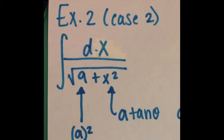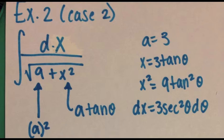In the next example, we'll be using an integral that involves Case 2. Here we have the integral of dx over the radical of 9 plus x squared. 9 is obviously a squared, and x squared uses a tangent theta substitution because it fits Case 2, which is the radical of a squared plus x squared. Once again, I've written everything out on the side. a is 3 because the square root of 9 is 3. x is a tangent theta, so 3 times tangent theta. x squared is 9 tangent squared theta, and the dx of 3 tangent theta is 3 secant squared theta d theta.